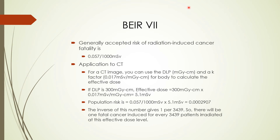We can apply this to a CT scan. For example, suppose a body CT scan reports a DLP of 300 mGy·cm. We can use the K factor for body scans of 0.017 mSv per mGy·cm to get an effective dose of 5.1 mSv. We can then multiply this effective dose by a risk factor of 0.057 per sievert to get 0.0002907. The inverse of this number gives us the risk estimate of one additional fatal cancer above natural incidence in 3,439 patients scanned at this dose level.